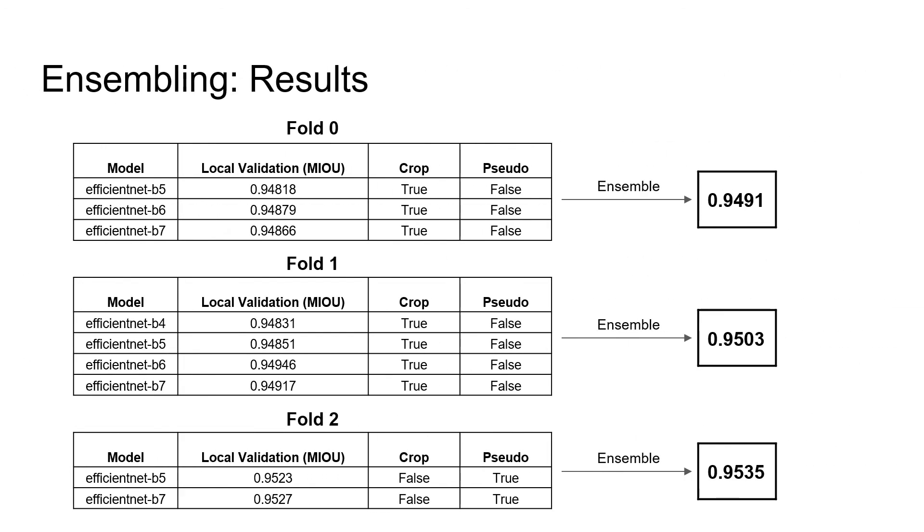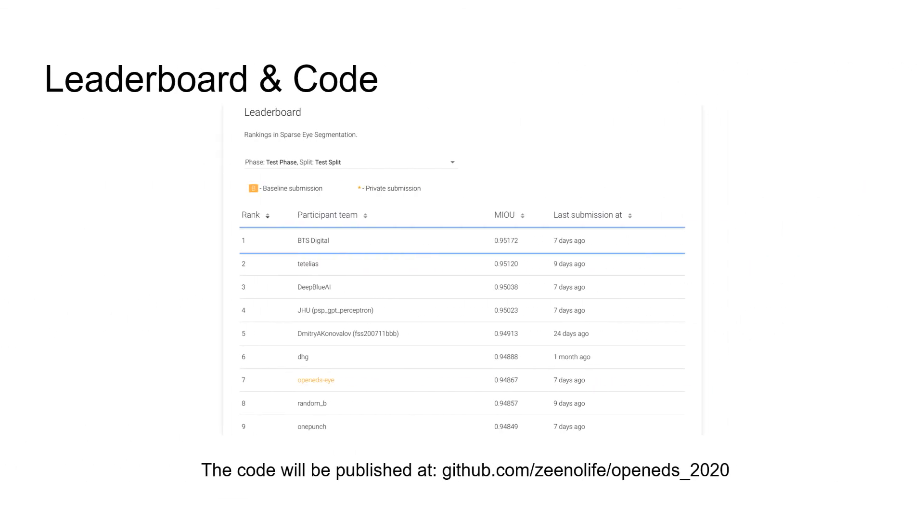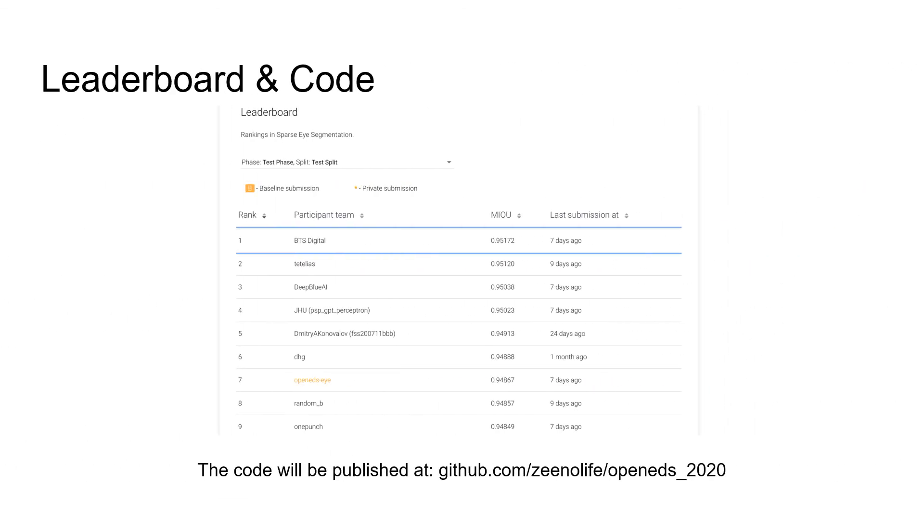Here are the results of our ensembling on localization. If you look closely, you can see that we can get a consistent gain of 0.1%. Using all of the techniques described, we were able to get the first place in the competition.